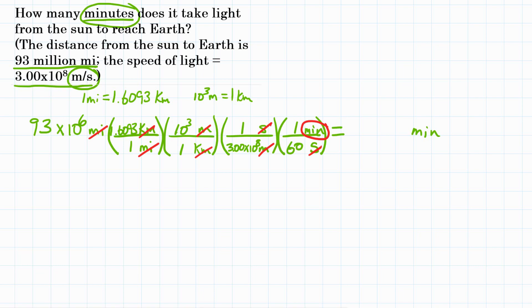So now we've got to plug this in our calculator. To do that, you will start with 93 times 10 to the 6th. Now we're going to multiply by the top of each conversion factor and divide by the bottom, skipping any 1s because they won't change our answer. So we will multiply by 1.6093, we will multiply by 10 to the 3rd or 1,000. Now we want to divide by the bottom of the third conversion factor, but we need to make sure that that all stays together. So open parenthesis and then put 3.00 times 10 to the 8th, close parenthesis, and then finally divide by 60.